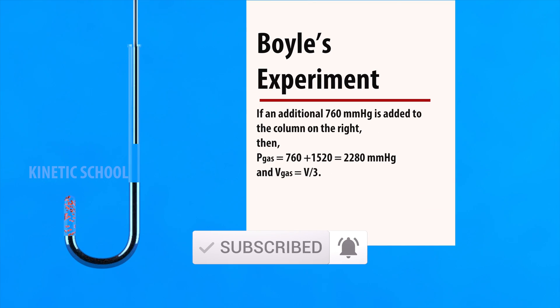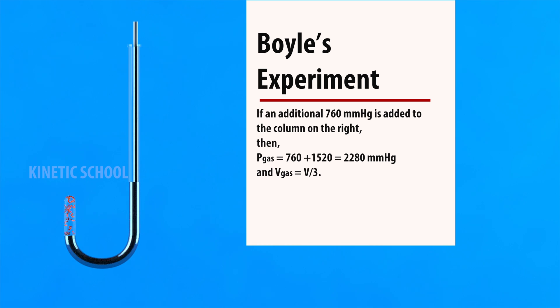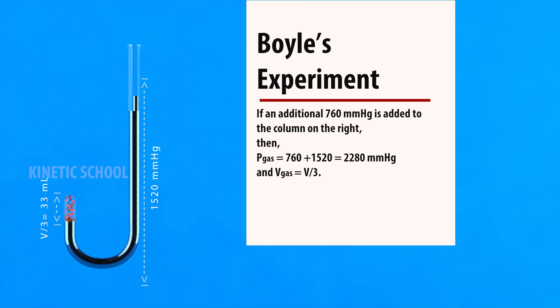If an additional 760 millimeters of mercury is added to the column on the right, then the total pressure on the gas increases to 2280 millimeters of mercury, and the volume of the gas decreases to one-third.